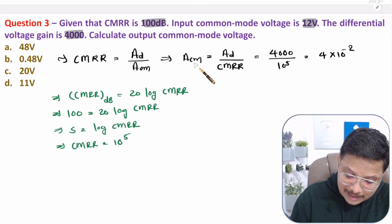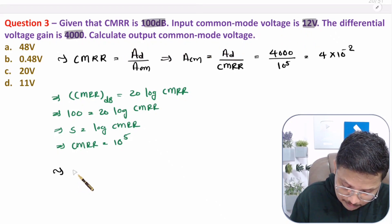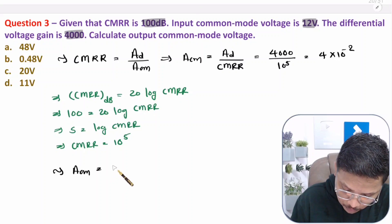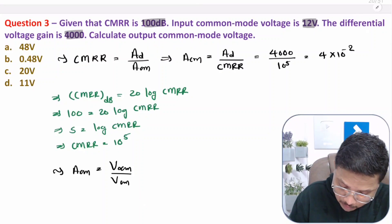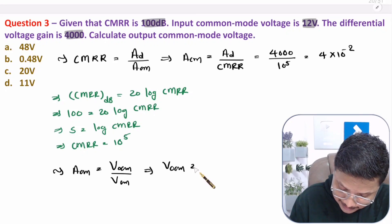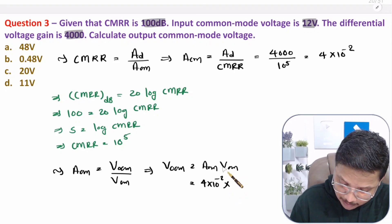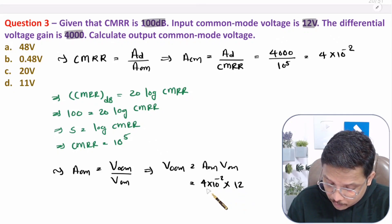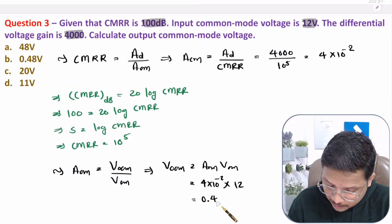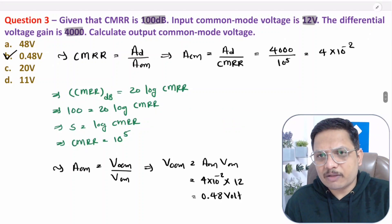Now we have common mode gain and common mode input voltage, so we can find the common mode output voltage. Common mode gain equals common mode output divided by common mode input. So common mode output equals ACM × VCM = 4 × 10^−2 × 12 = 48 × 10^−2 = 0.48 volt. So the answer is option B. That is how simply we can solve this type of question.